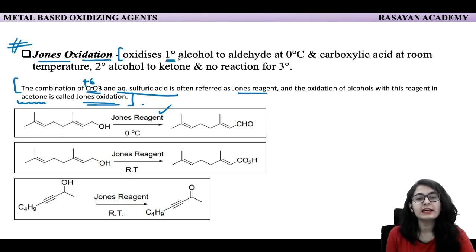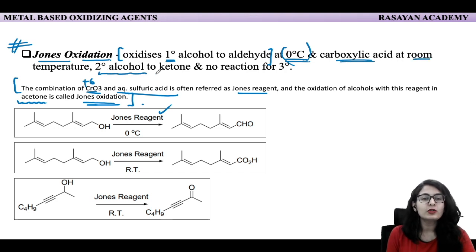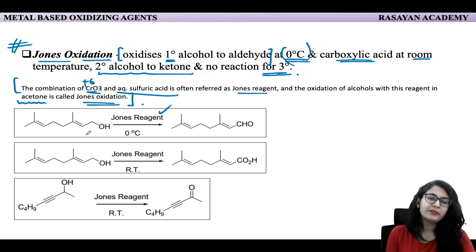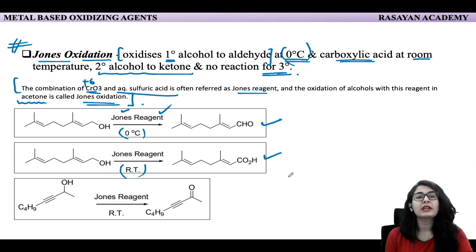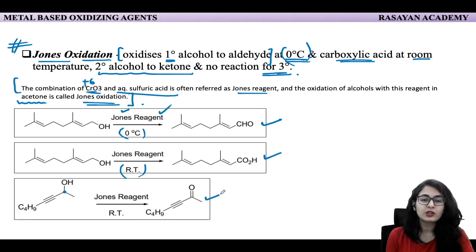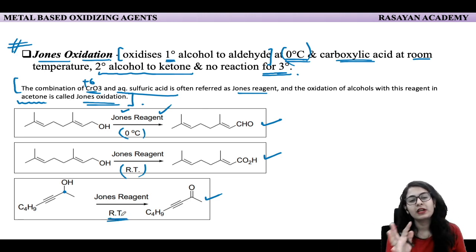Jones reagent oxidizes primary alcohol to aldehyde at 0°C — be specific about this — and to carboxylic acid at room temperature. Secondary alcohol is oxidized to ketone because no further reaction is possible without breaking the carbon–carbon bond. There is no reaction for tertiary alcohol. For example, an allylic alcohol treated with Jones reagent at 0°C is only going to oxidize the primary alcohol to aldehyde — that is partial oxidation. At room temperature, it is complete oxidation to acid.